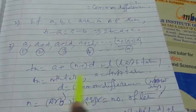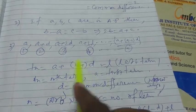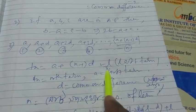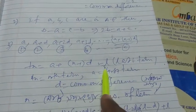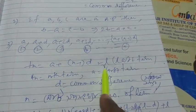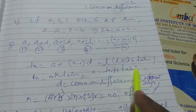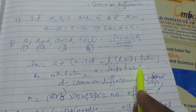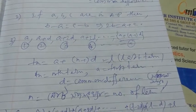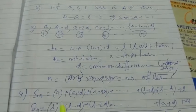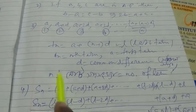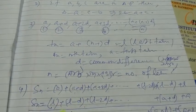These terms are also called the last term, denoted by l — that is the last term. And n equals the number of terms.